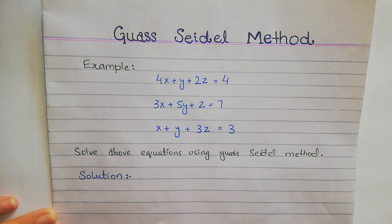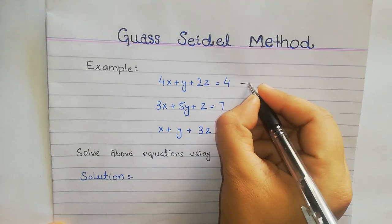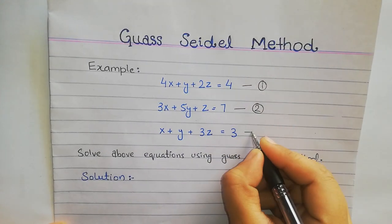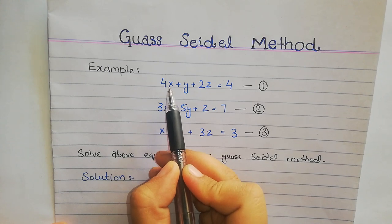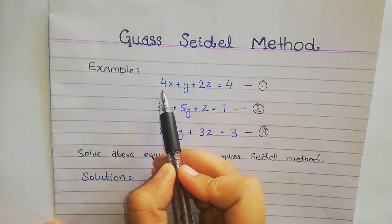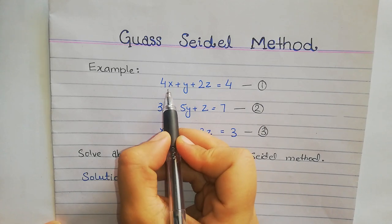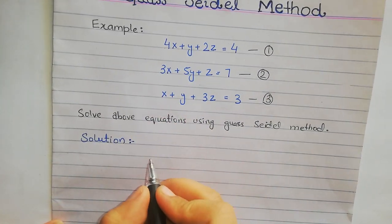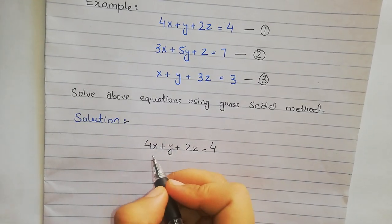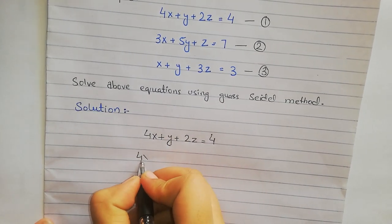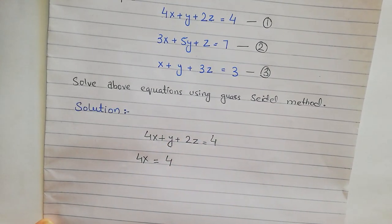Let's start the solution. First, we will label the given equations as 1, 2, and 3. Now, since the coefficient of X is largest in the first equation compared to Y and Z, we will extract the value of X from the first equation. We write 4x on one side equals 4, and move the Y and Z values to the other side.